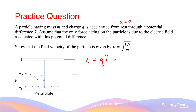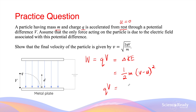This energy is transformed into the kinetic energy of the charged particle, given by half m times (v squared minus u squared), where v is the final velocity and u is the initial velocity. Since the particle starts from rest, u equals zero, simplifying to qV equals half mv squared. Rearranging gives v equals the square root of 2qV divided by m.